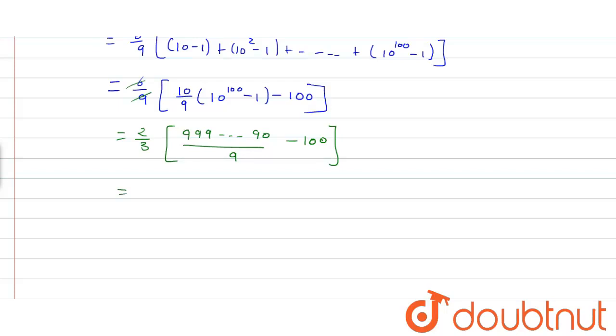By further solving, we get (2/3)[111...110 - 100], where 1 is repeated 100 times.